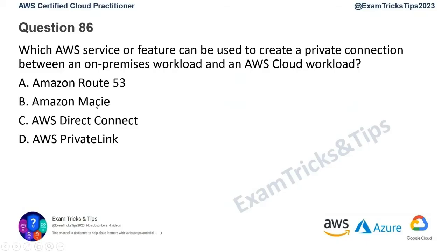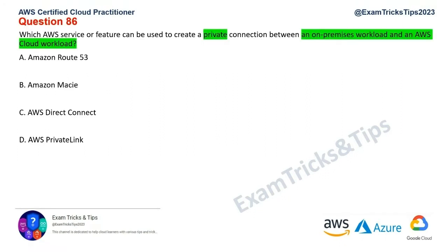Question 86: which AWS service or feature can be used to create a private connection between an on-premise workload and AWS Cloud? Mark your keywords. We need a private connection between an on-premise workload and an AWS Cloud workload. Let's analyze each option and rule out the wrong ones to get to the correct answer.